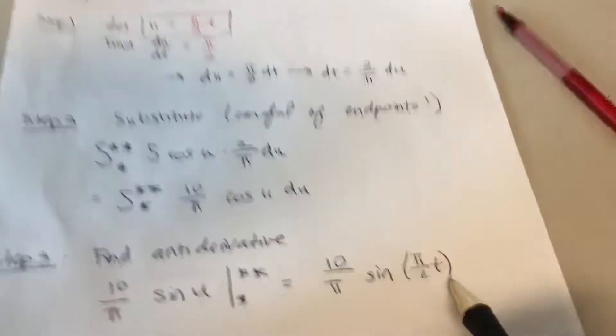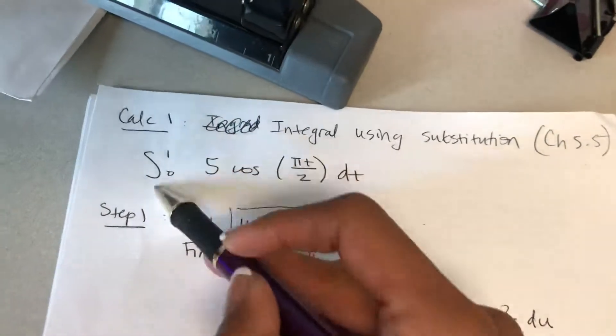I always want to go back to my original variable. And now that I'm back to my original variable, I could use the original endpoints 0 to 1.